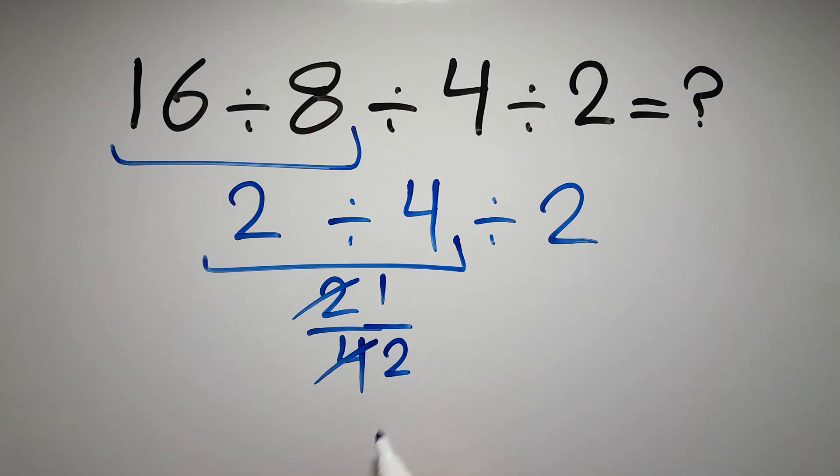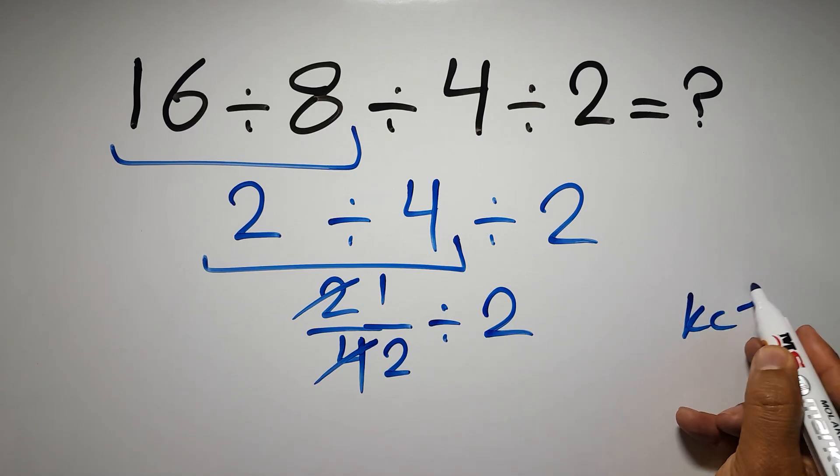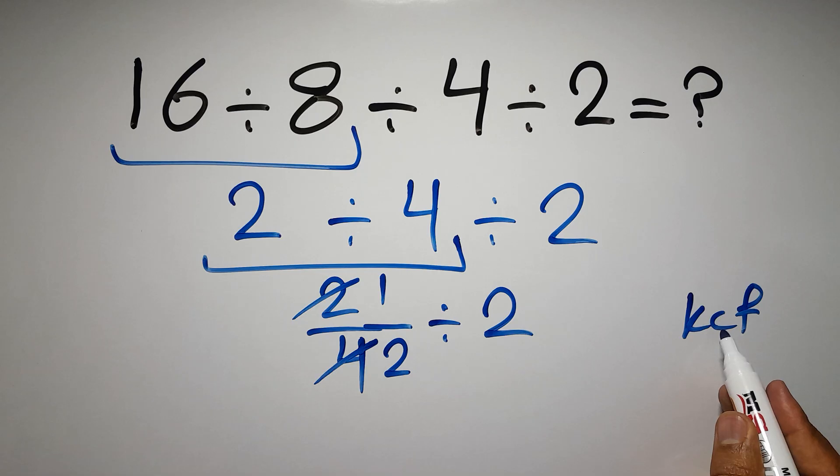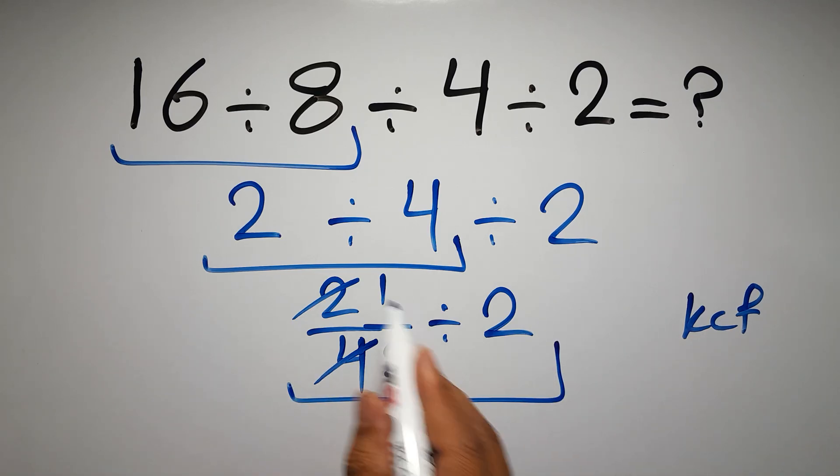Then divided by 2. Okay, 1 over 2 divided by 2. According to the KCF rule, K stands for keep, C stands for change, and F stands for flip. We can write keep the first fraction...